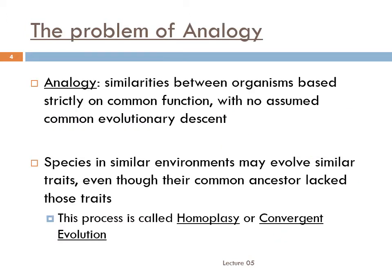We specify that homologies exist because of common descent to distinguish them from another kind of similarity: analogies, or similarities between organisms based strictly on common function with no assumed common evolutionary descent. Natural selection adapts species to their natural environments, so sometimes species in similar environments evolve similar traits even though their common ancestor lacked those traits. This process is called homoplasy, or convergent evolution. Homoplasy is the process that creates analogy — the result.